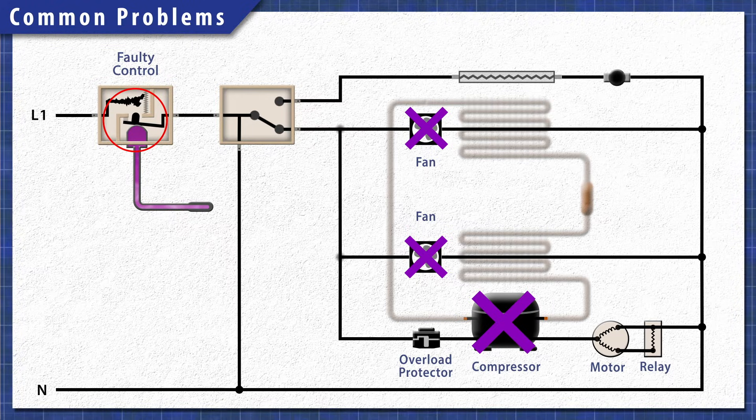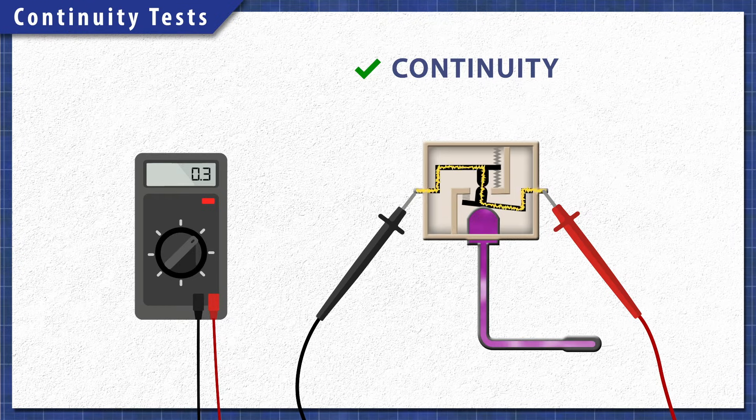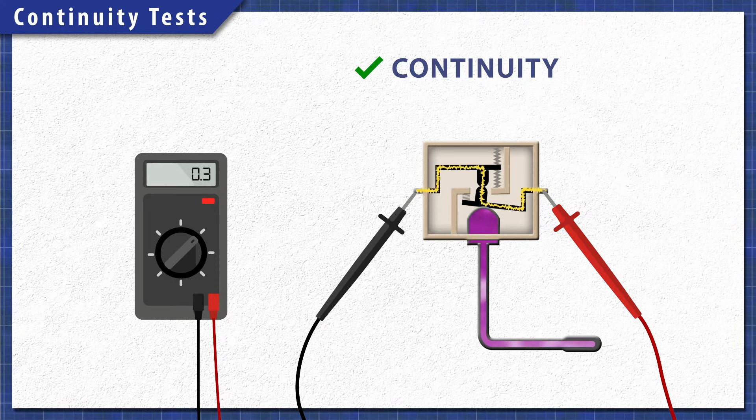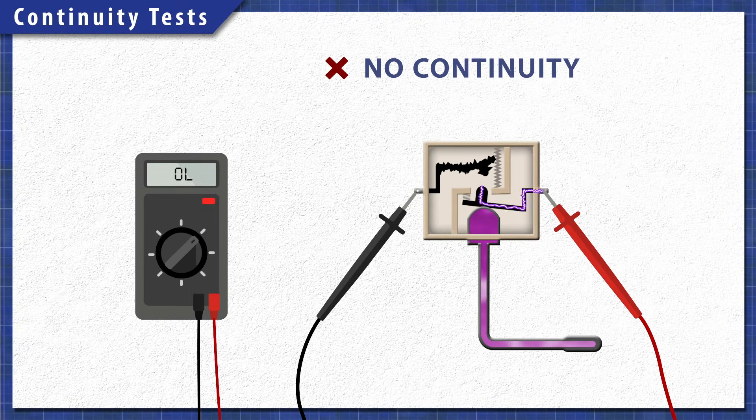Using a multimeter, components can be tested for continuity. A continuity test determines if there's a continuous path for electricity to flow through. Without continuity, the component will not work and will need to be replaced.